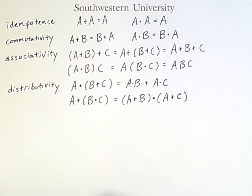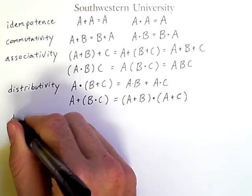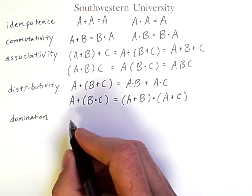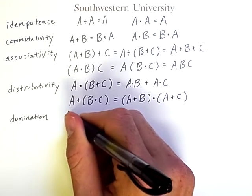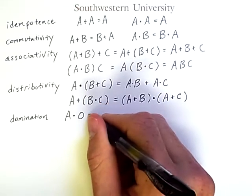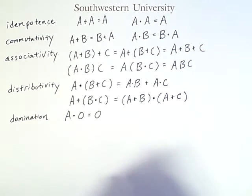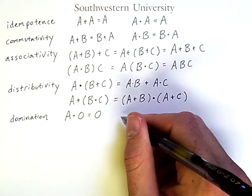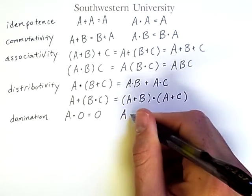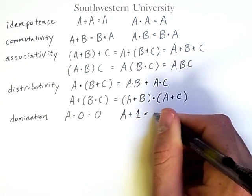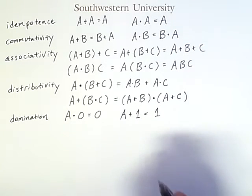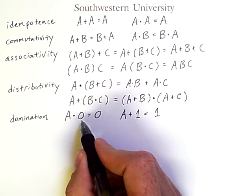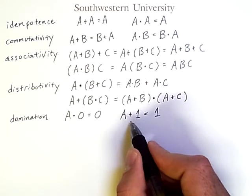Now we have a few more laws which have some unfamiliar names such as domination. But they make sense once you understand what they're saying. A AND 0 is always equal to 0 no matter what A is. Another way of thinking of this is that A AND false is always false. Similarly, A OR 1 is always equal to 1. Another way of thinking of this is that A OR true is always true, no matter what A is. In this case we say that 0 dominates AND, and that 1 dominates OR, hence the name.